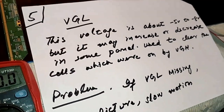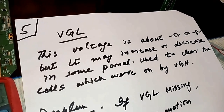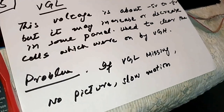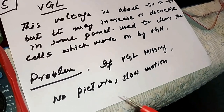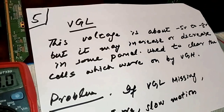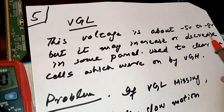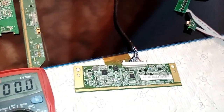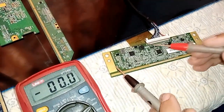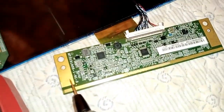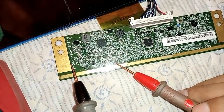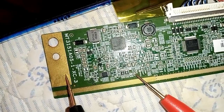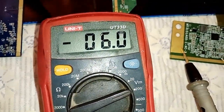The last voltage of the panel is VGL, which is a negative voltage. It is used to cut off the panel cells that were powered on by VGH. If VGL is missing, the problem is no picture, slow motion, or display issues. This voltage is about minus 5V to minus 8V, and checking on the scalar PCB, the meter shows minus 6V.